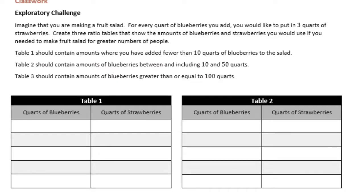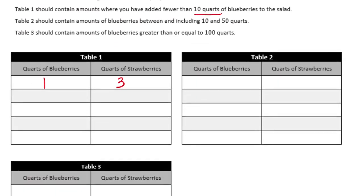So let's start with Table 1. We need to have fewer than 10 quarts of blueberries. Going back to the original ratio: for every 1 quart of blueberries, you add 3 quarts of strawberries. So we start with 1 quart of blueberries and 3 quarts of strawberries. We'll go up to 1, 2, 3, 4, and 5 quarts. The relationship is for every 1 quart of blueberries there are 3 strawberries, so we can just multiply by 3.